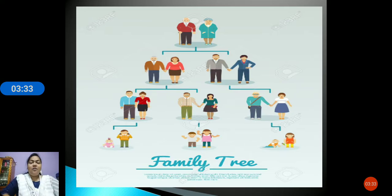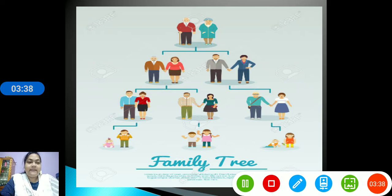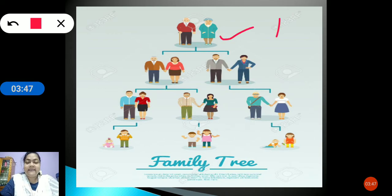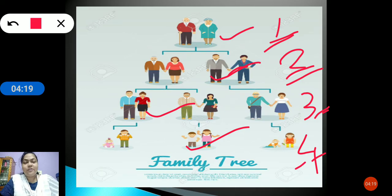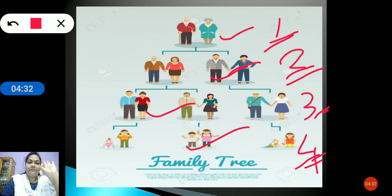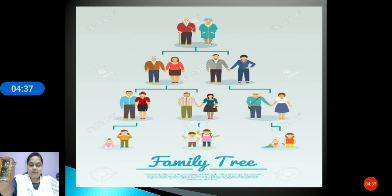Now let us look at the different levels of the family tree. Level 1 is the great-grandparents, level 2 is our grandparents, level 3 is the parents, and level 4 is us — the children. Always remember there are 4 levels in a family tree: level 1 great-grandparents, level 2 grandparents, level 3 parents, and level 4 children.